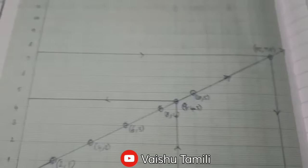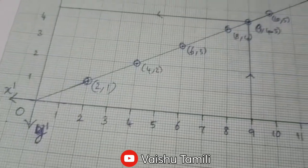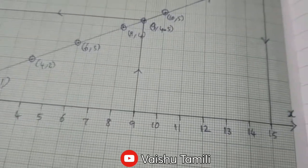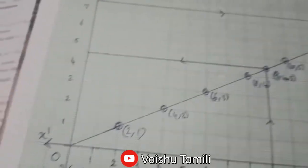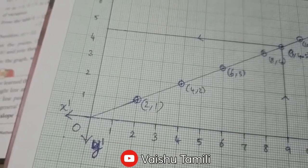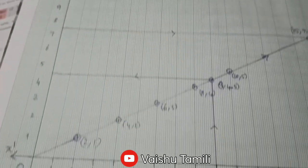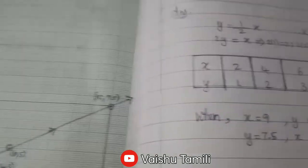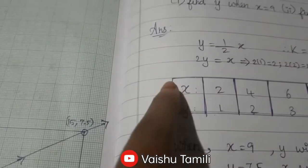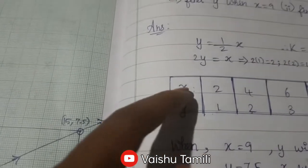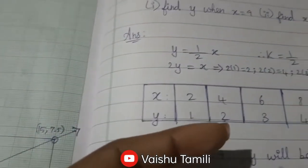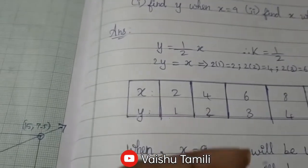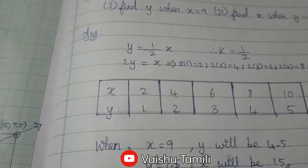So 1 unit equals 1 unit. Mark one unit. This is 1 unit. This is x and x-dash 0, y-dash y. First point: the coordinate pairs are (2,1), (4,2), (6,3), (8,4), and (10,5).